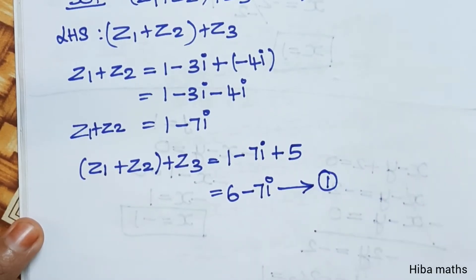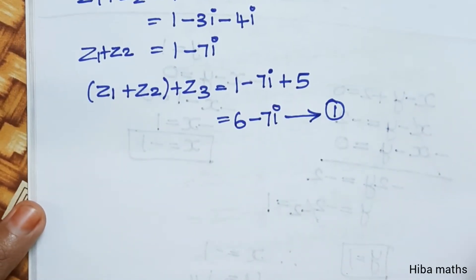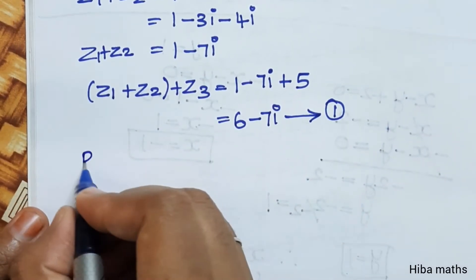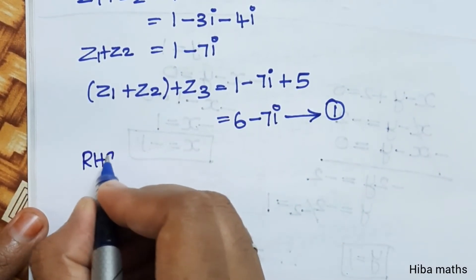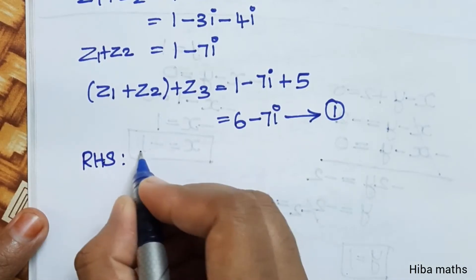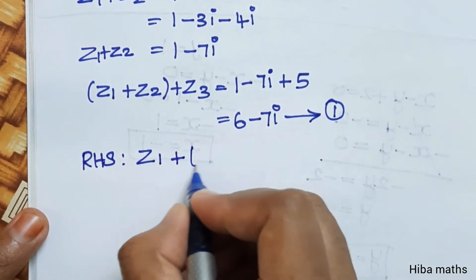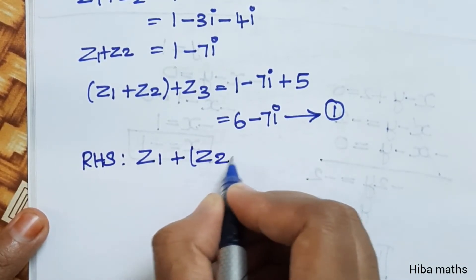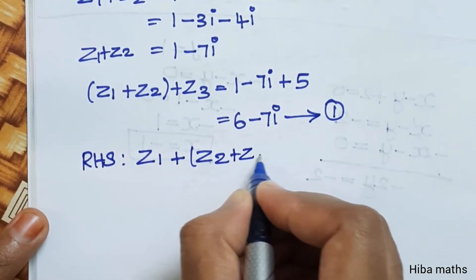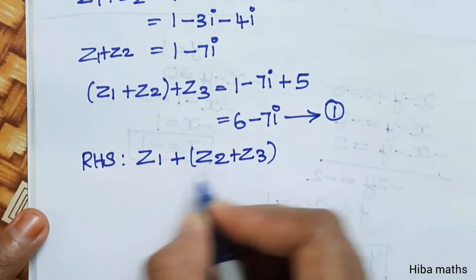This is our first equation for the LHS. Now we solve the RHS: z1 plus z2 plus z3.